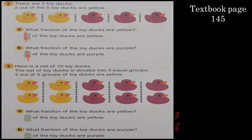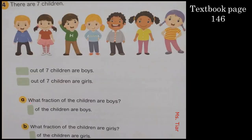Now let's expand this fraction. Here is a set of ten toy ducks divided into five equal groups. We put them into groups: first, second, third, fourth, fifth. What fraction are yellow? Two groups out of five groups are yellow — two out of five. What fraction are purple? Three groups out of five are purple — three out of five. Do you understand?